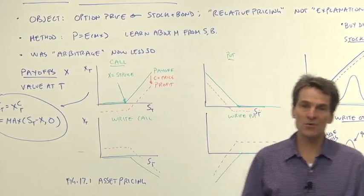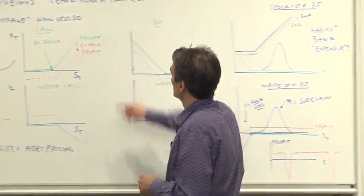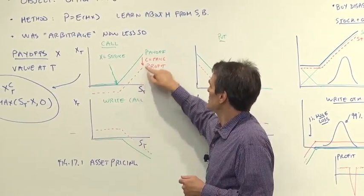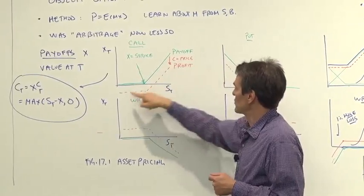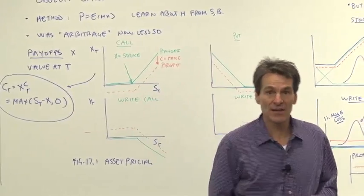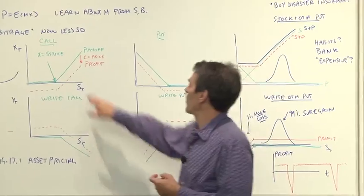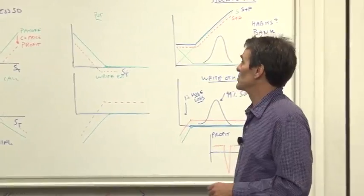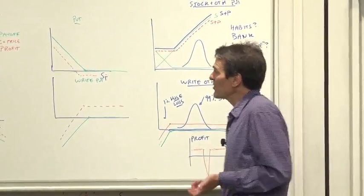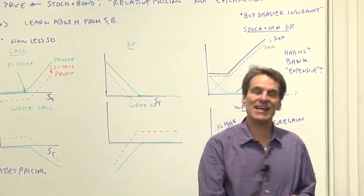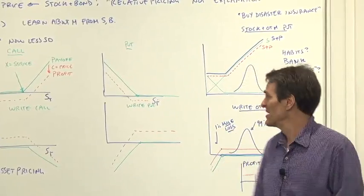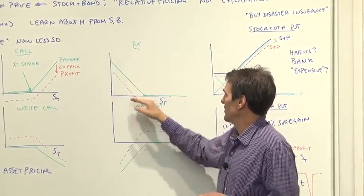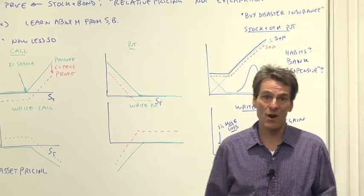Do not confuse payoff and profit. The call option costs something to buy, so the profit is the payoff minus the initial price — I've drawn that in red. But we will almost always be using payoffs, not profit. Another common option is the put option, which is the right to sell a stock at a high price. That right is obviously worth something if the stock price falls. There is the payoff, and there is the profit from the put option strategy.